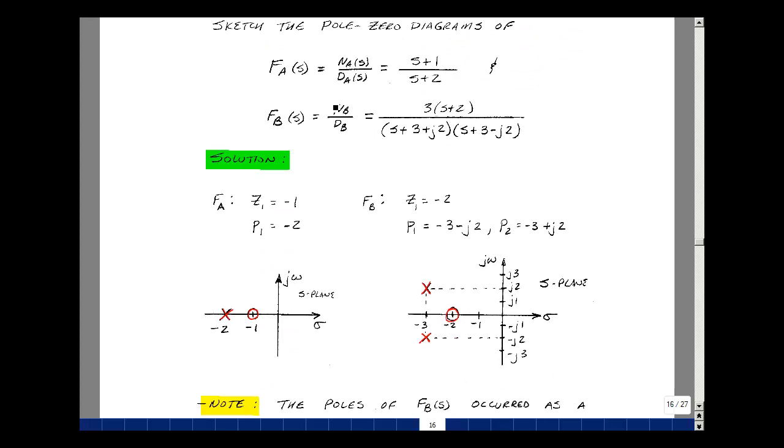We'll draw our s-plane as having a real x-axis and an imaginary y-axis. In our function f_a, the function goes to zero when s equals -1, and the denominator goes to zero when s equals -2. So f_a equals zero when s equals -1, and equals infinity when s equals -2. We'll show at z₁ equal to -1 a zero, and at -2 a pole, and that would be our pole-zero diagram.